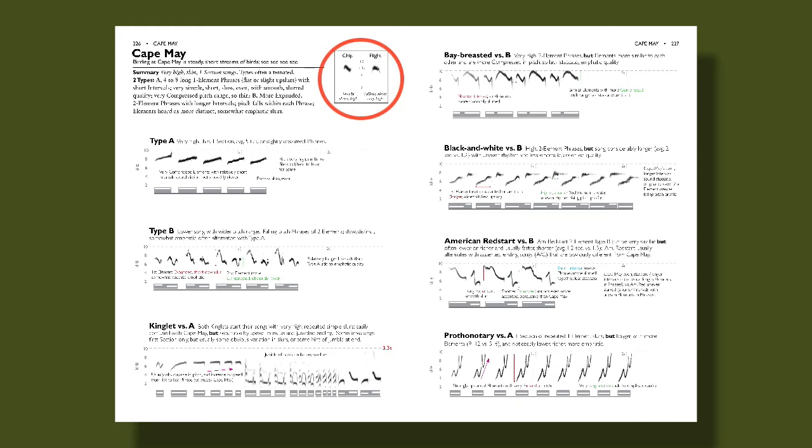Another important inclusion in our book are chip and flight calls. Whereas many birders are relatively familiar with warbler songs, which are often given in migration and on the breeding grounds, chip and flight calls are short vocalizations, chips and chirps, that can be very useful to identify a bird.